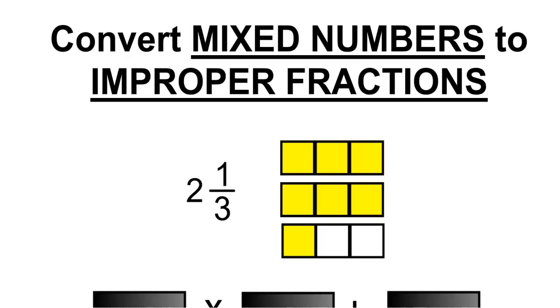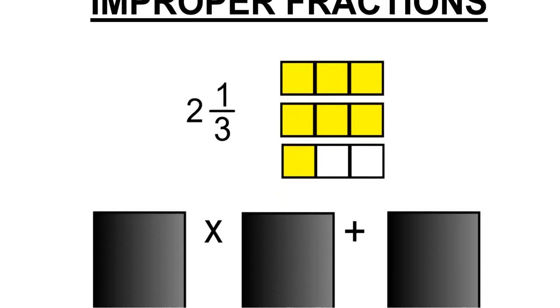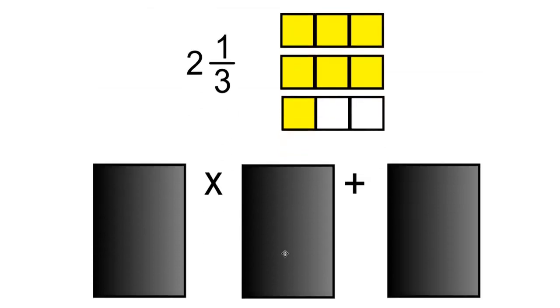Convert mixed numbers to improper fractions. For this example, we'll convert the mixed number 2 and 1 over 3 to its improper fraction.